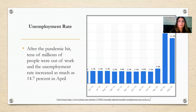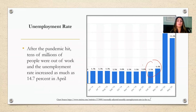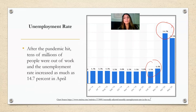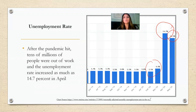Before the pandemic, the unemployment rate in the United States was as low as 3.5%, which is considered the natural rate of unemployment. After the pandemic, tens of millions of people were out of work and the unemployment rate increased as much as 14.7% in April. As states started to reopen and some businesses resumed their operations, the unemployment rate fell to 13.3% in May. However, this rate is still higher than the highest unemployment rate during the 2008 recession, which was around 10%.